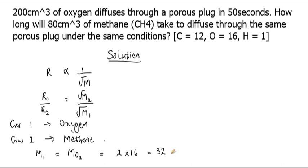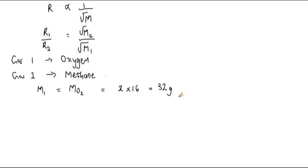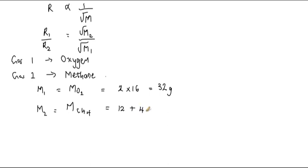Therefore, M₁ = 32 grams per mole. Now for methane: M₂ = M(CH₄). To calculate the molecular mass of methane, we have one atom of carbon with atomic mass 12, plus 4 atoms of hydrogen, so that's 4 times 1. This gives us 12 plus 4, which is equivalent to 16. So M₂ = 16 grams per mole.